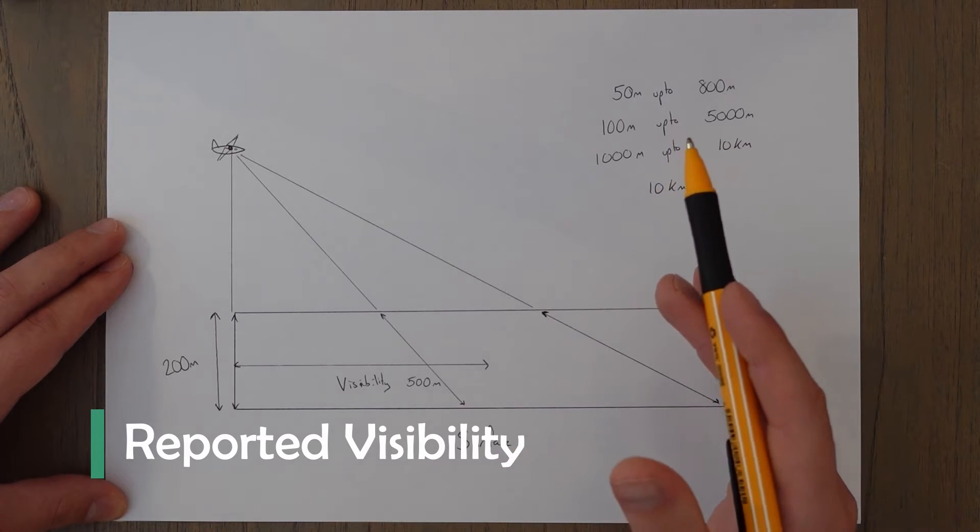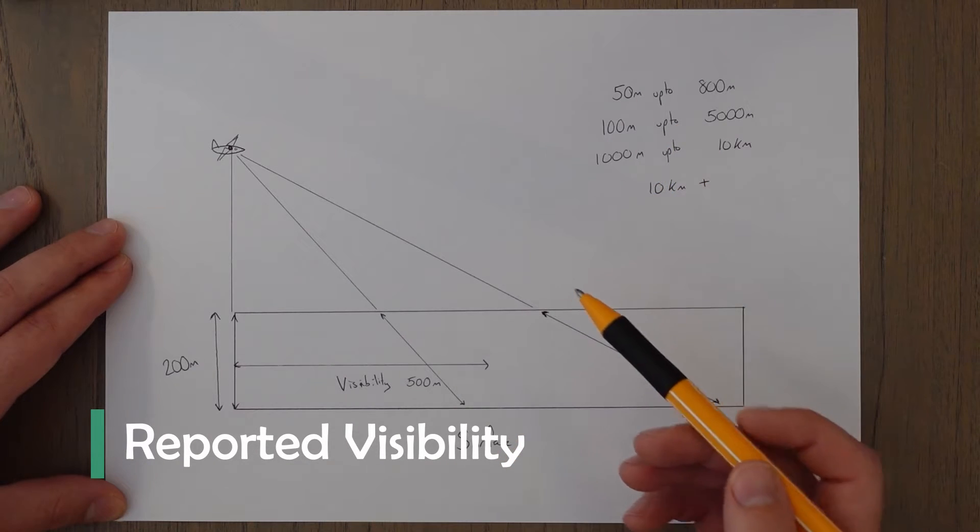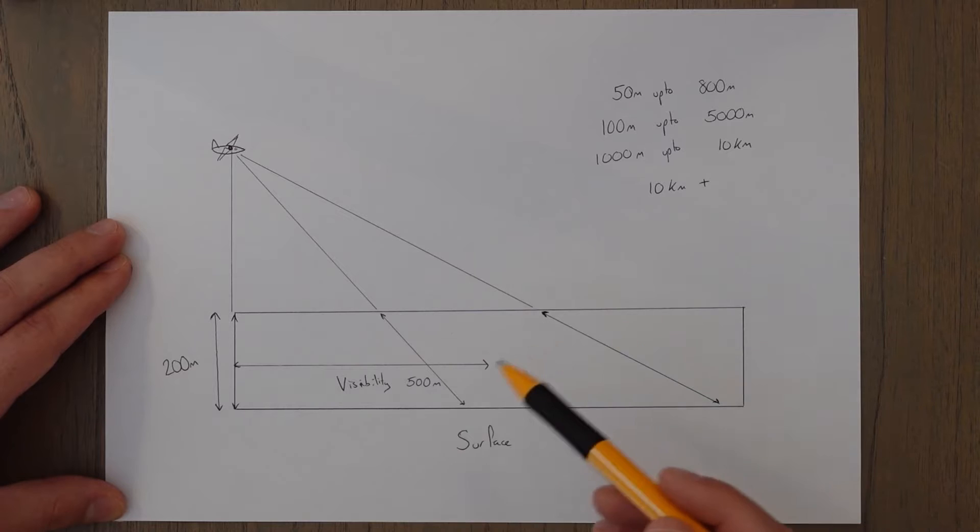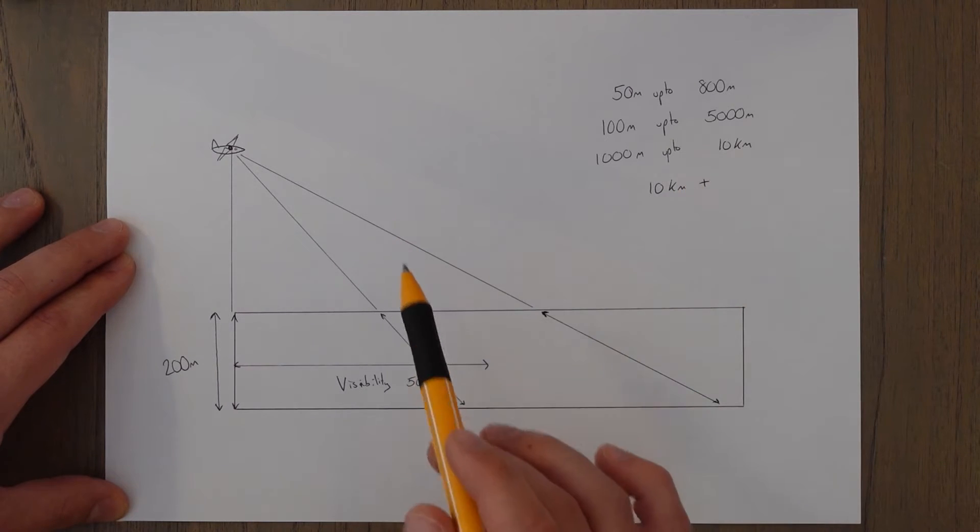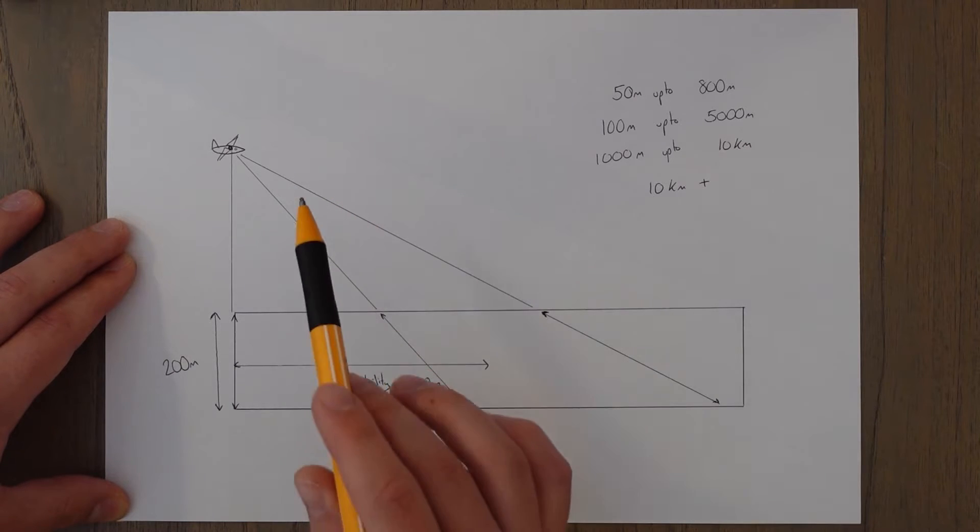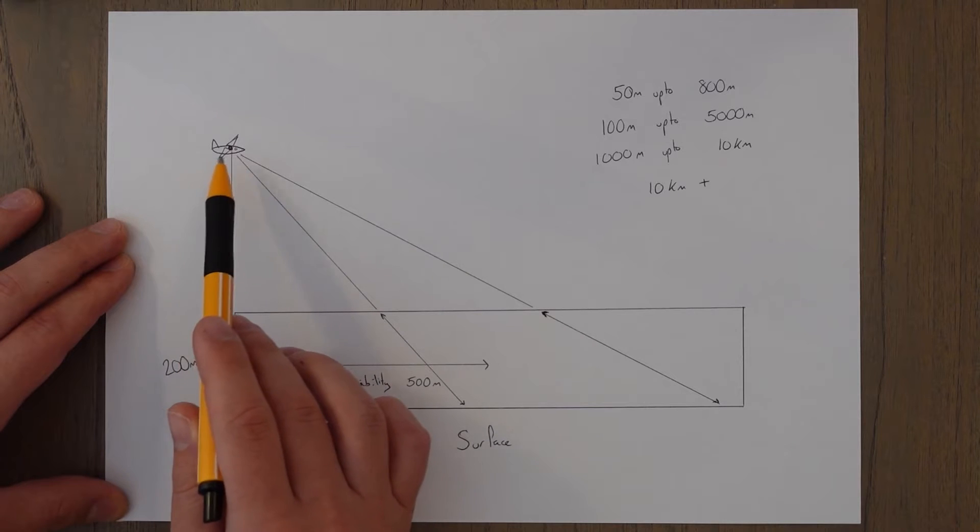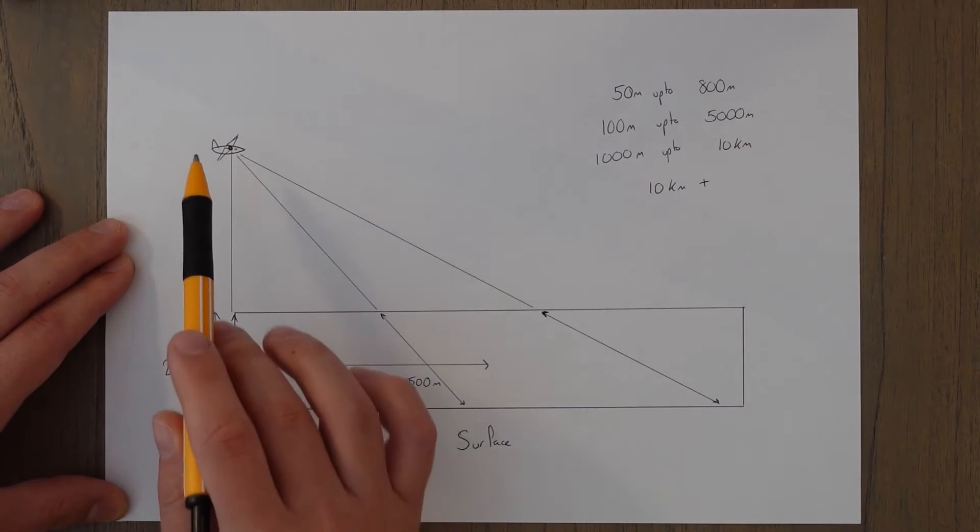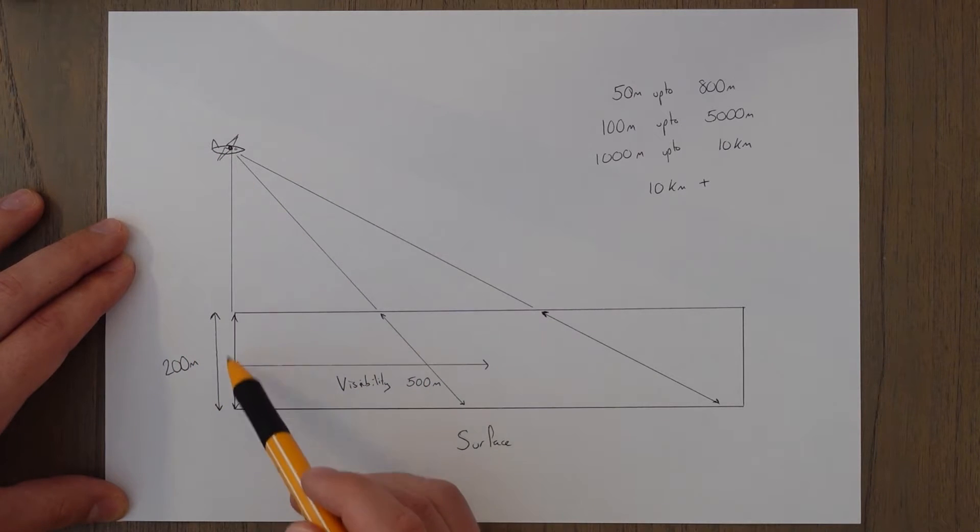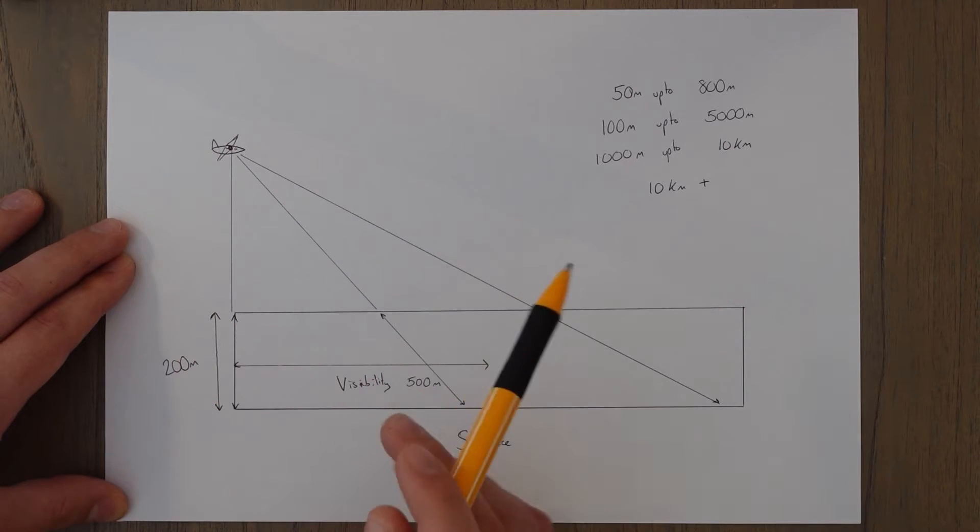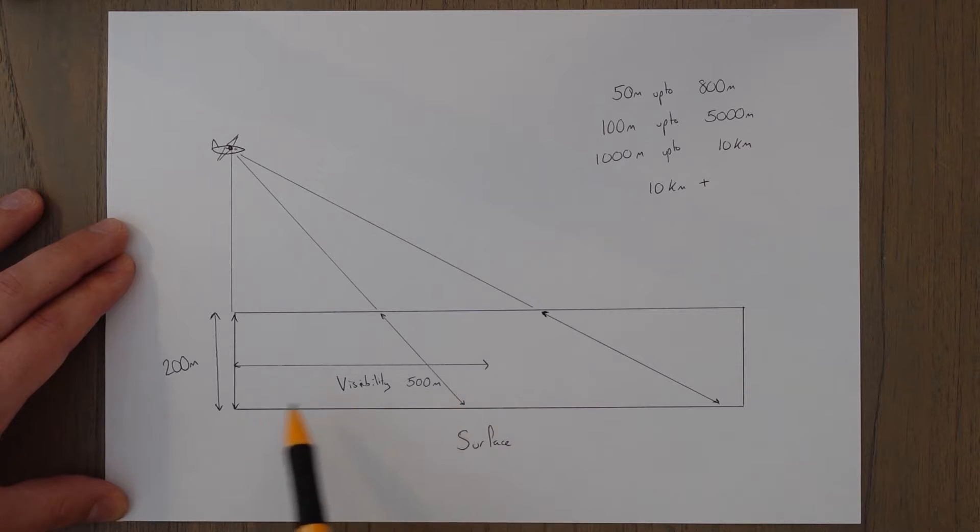As pilots we are interested in visibility at the surface which will be measured at the aerodrome, but before we go into that there's an important point to make. So the visibility on the ground and the visibility in the air will be slightly different. Say we had an aircraft up here, it doesn't really matter what the height is, but we're above a 200 meter layer of fog and the visibility within that fog is 500 meters.